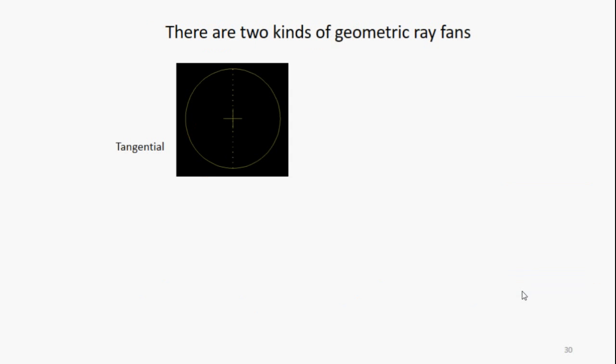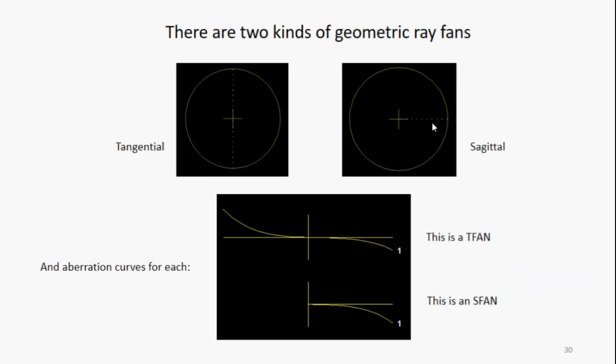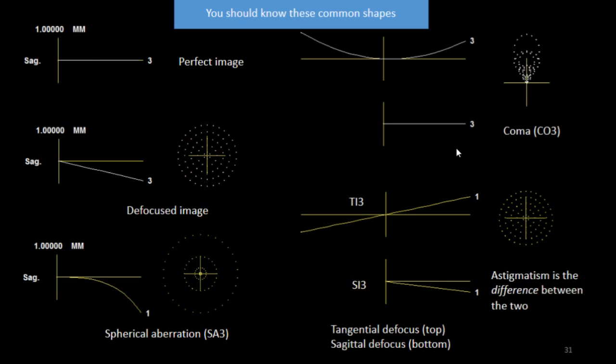Now there are two kinds of geometric ray fans. There's a tangential fan where the rays go from bottom to top, and the sagittal fan where they go from the center out to the edge. And there are different aberration curves for each one. And the T fan looks at the aberrations as you go from the bottom to the top of a pupil. The S fan looks at the aberrations as it goes from the center out to the edge. And you should know these common shapes. A perfect image, well, a straight line. An out of focus image, it's also a straight line, but it's at an angle. Spherical aberration says, well, it's in focus here, but it's not in focus there. So that gives you this kind of blur. You saw some coma before. That gives you this kind of a tangential fan. And if the sagittal and tangential are defocused in different amounts, that's called astigmatism.